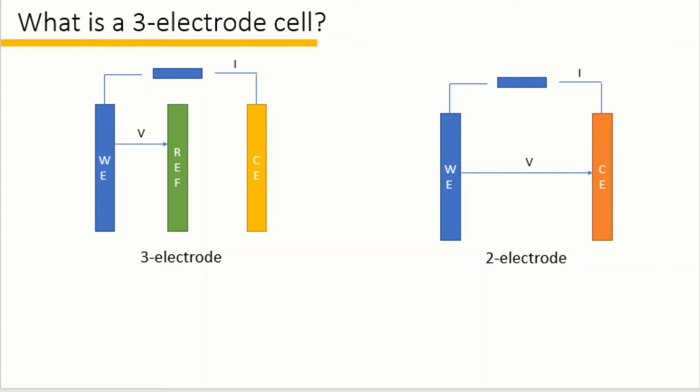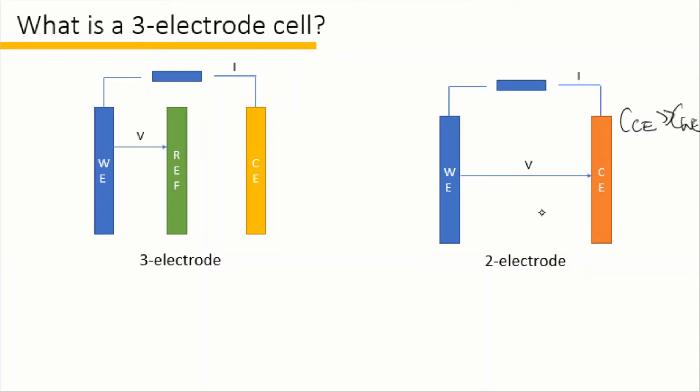If the counter electrode is overcapacitive, meaning that the capacitance of the counter is much larger than the working, then the potential of the counter electrode can hardly change during cycling. Then the counter electrode also functions as our reference electrode in this case, and we can monitor the single electrode again in our two-electrode fabrication.